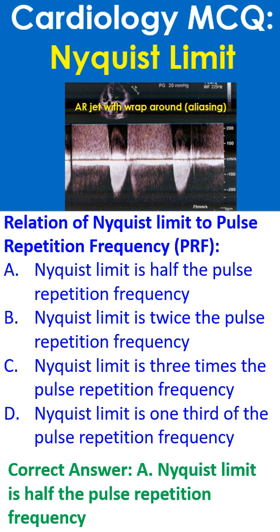Relation of Nyquist limit to Pulse Repetition Frequency. a. Nyquist limit is half the pulse repetition frequency. b. Nyquist limit is twice the pulse repetition frequency. c. Nyquist limit is three times the pulse repetition frequency. d. Nyquist limit is one third of the pulse repetition frequency.